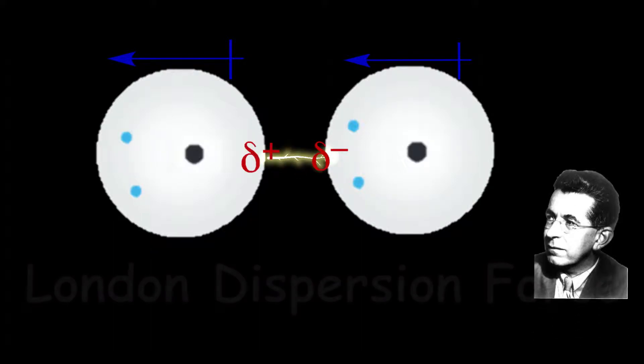However, Fritz London realized that the electrons could become unevenly distributed within the electron cloud, causing an instantaneous or momentary dipole moment. As the electrons end up on one side of the electron cloud, it forces the positive nucleus to momentarily shift away. This has an effect on the electrons in neighboring atoms, and causes them to also achieve an instantaneous dipole moment. This leads to an induced dipole-induced dipole interaction, known as the London dispersion force.